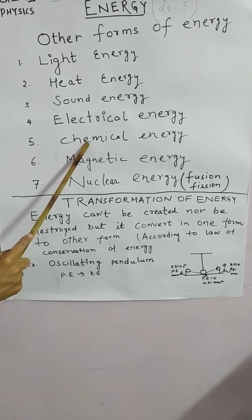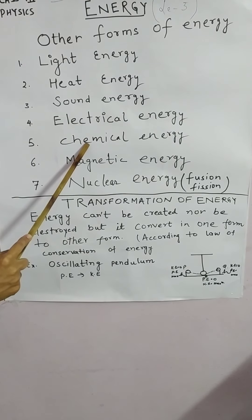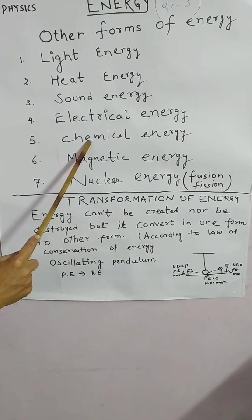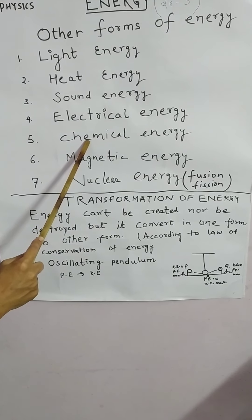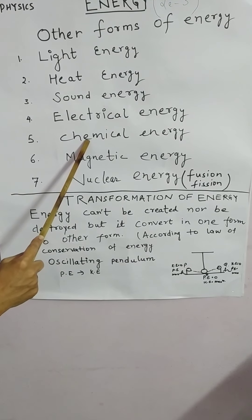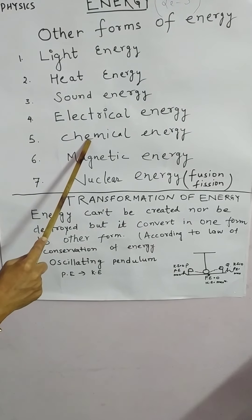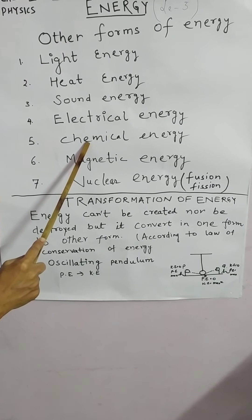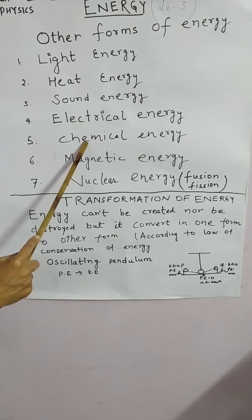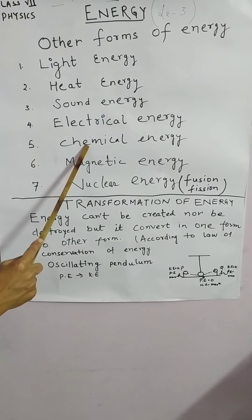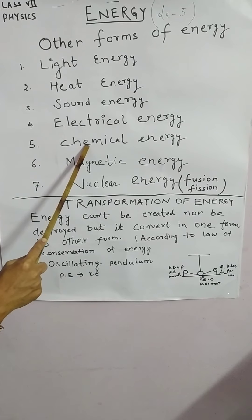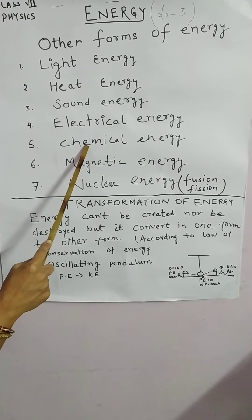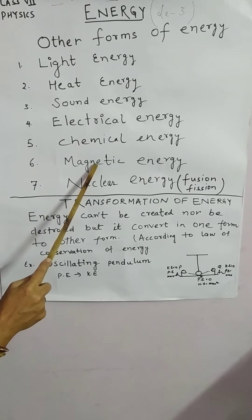Chemical energy. The energy stored within the bonds of atoms and molecules which can be released through chemical reactions. Example: all fossil fuels store energy in the form of chemical energy.